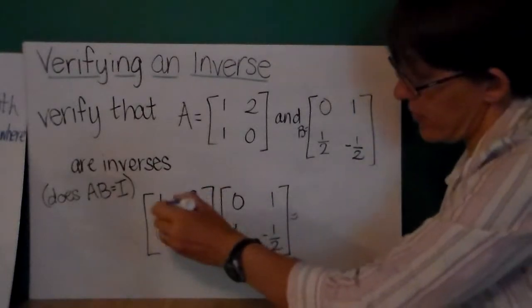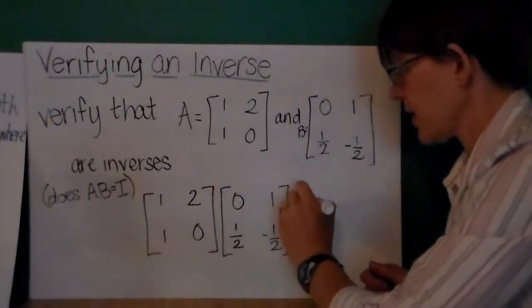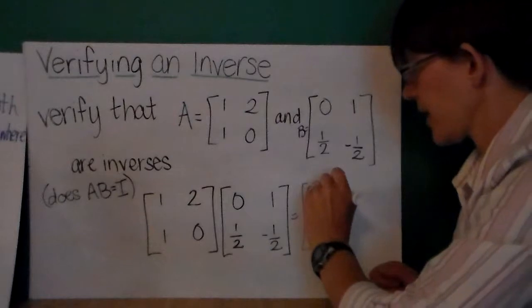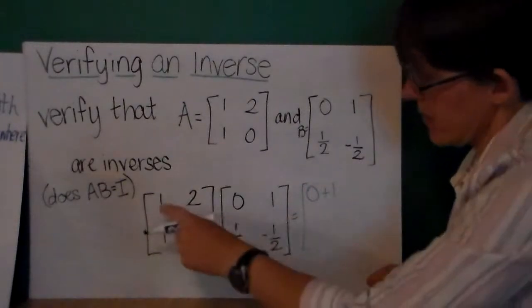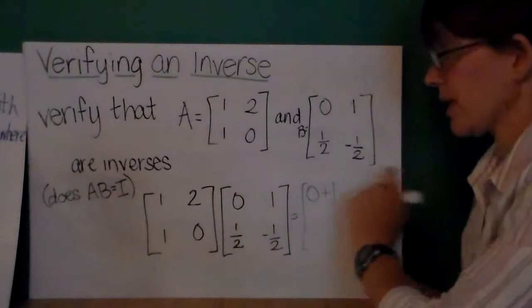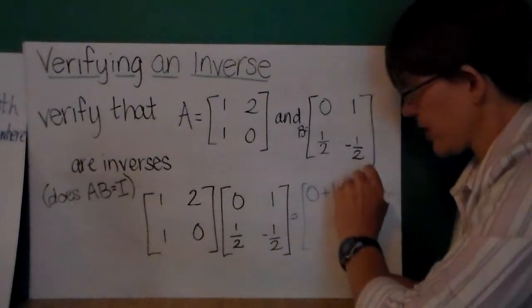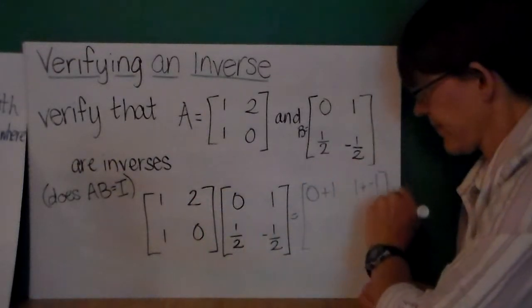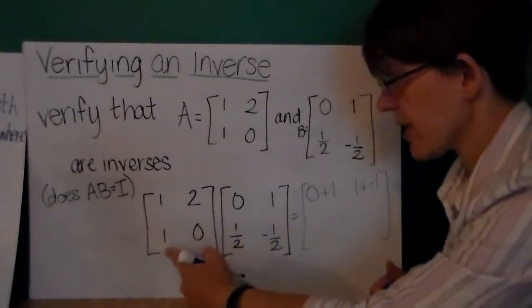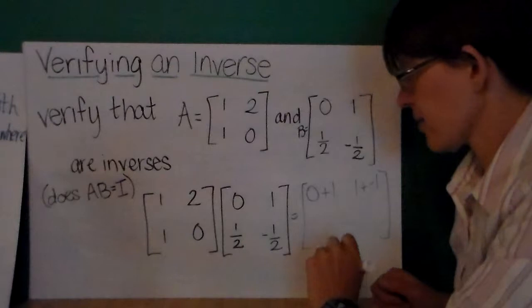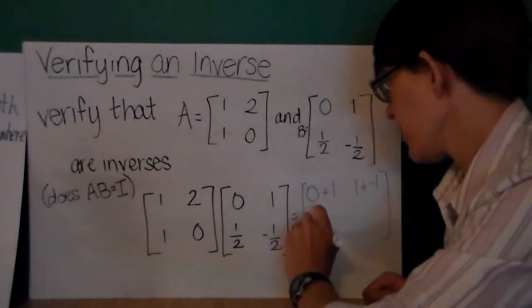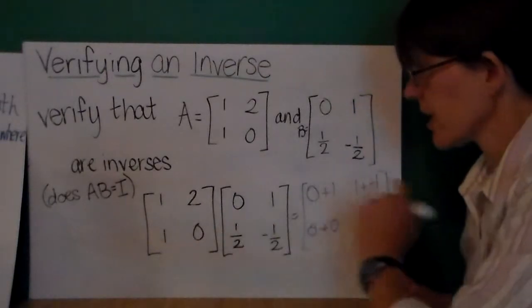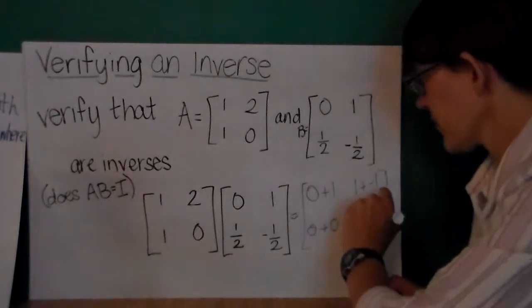So multiply 1 and 2 by 0 and 1/2. I get 0, 1 times 0 is 0, plus 2 times 1/2, that is 1. Continuing on. My first row, second column entry, I have 1 times 1 is 1, 2 times negative 1/2 is negative 1. And then moving on to my second row. Second row times first column, I have 0 plus 0. And second row times second column, I have 1 plus 0.